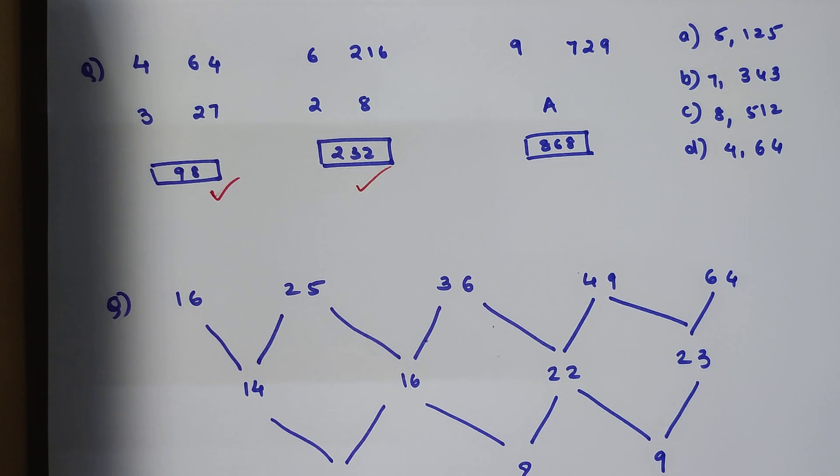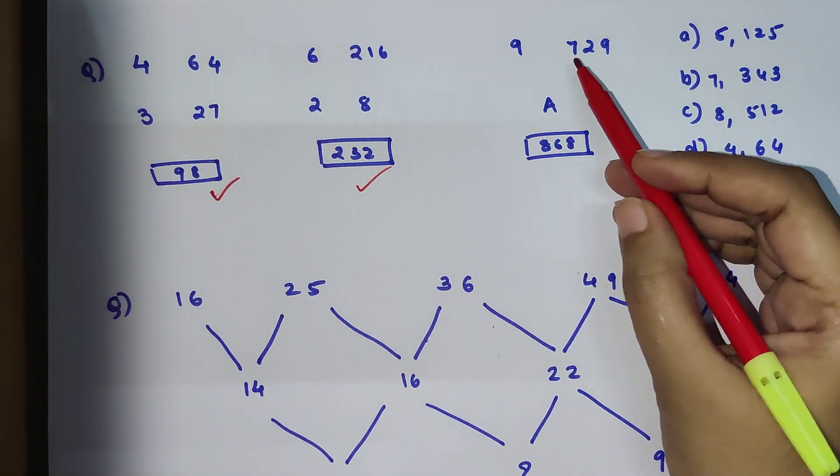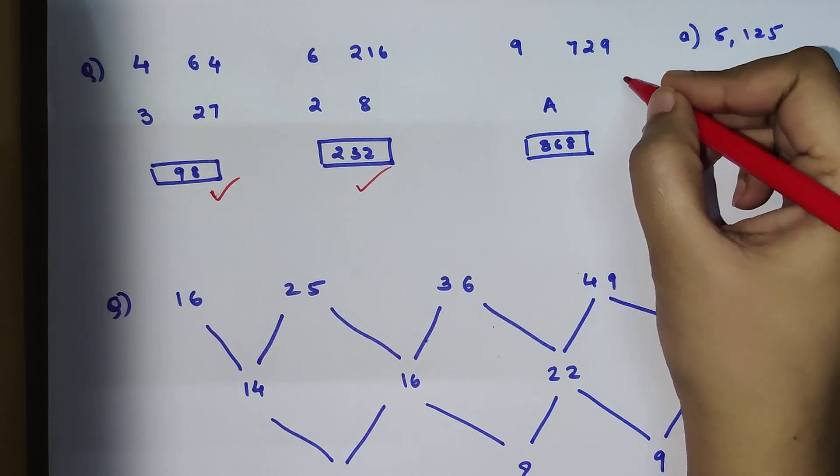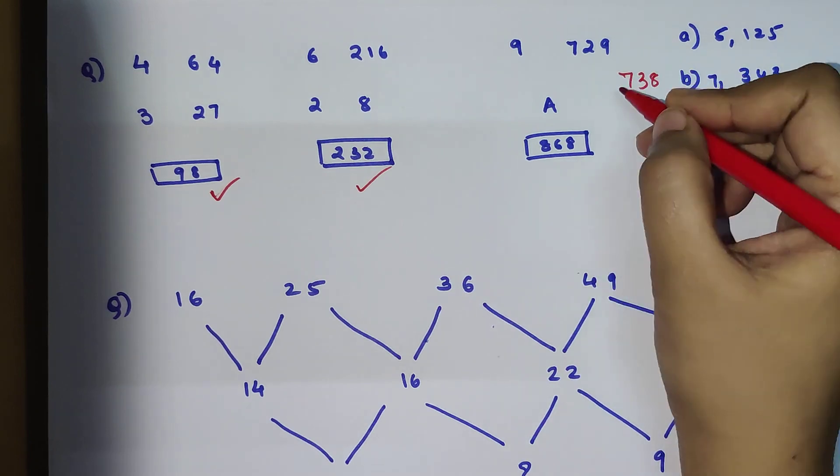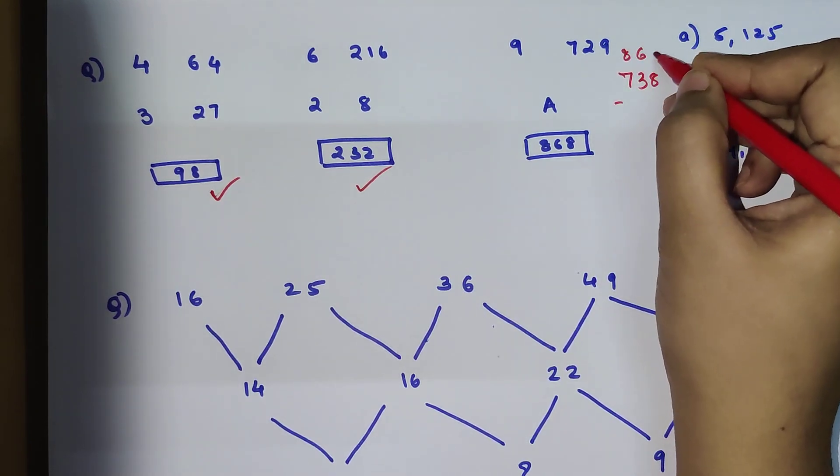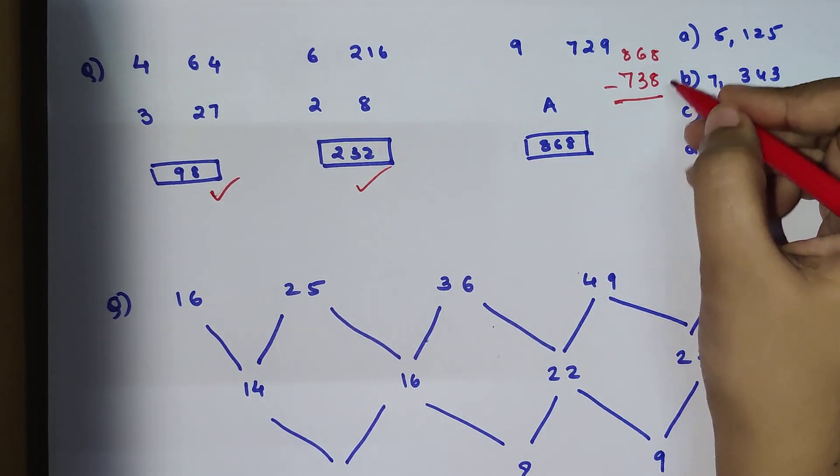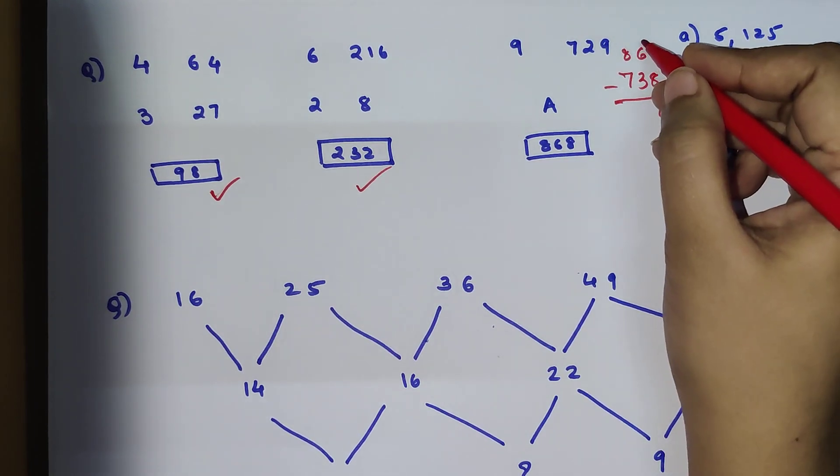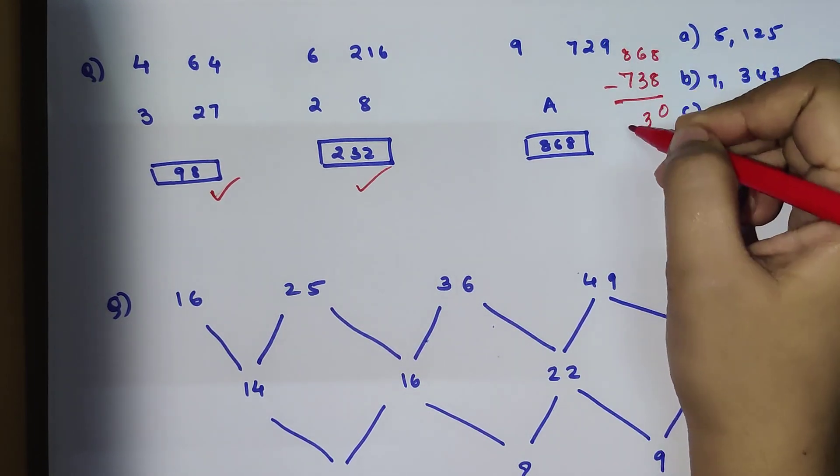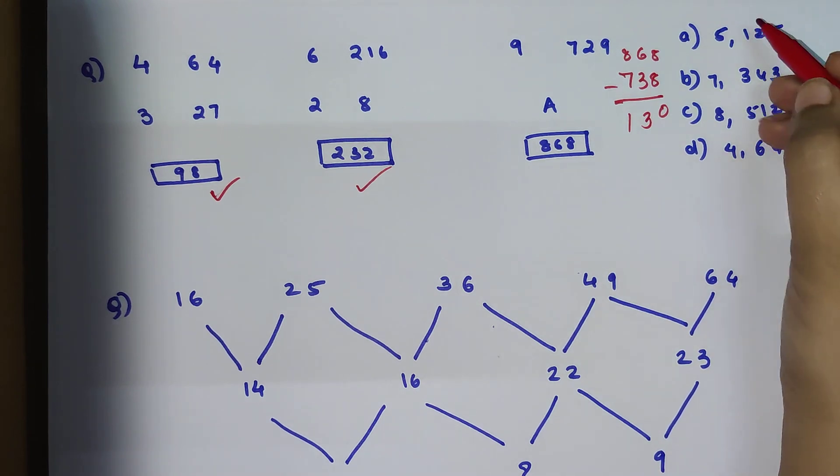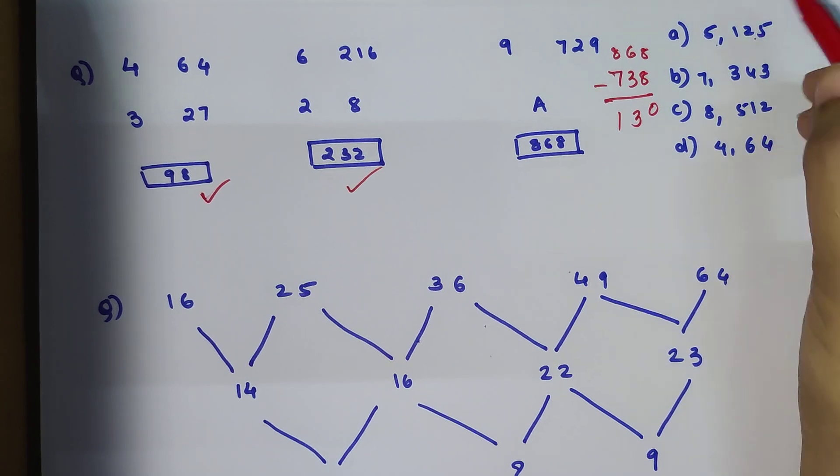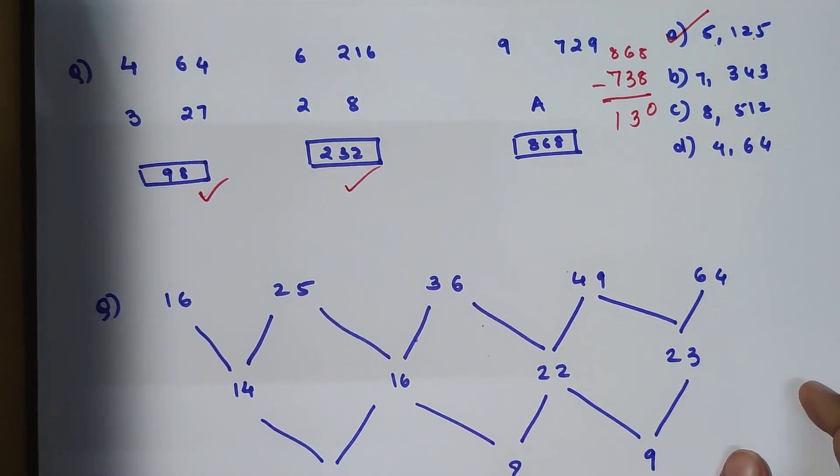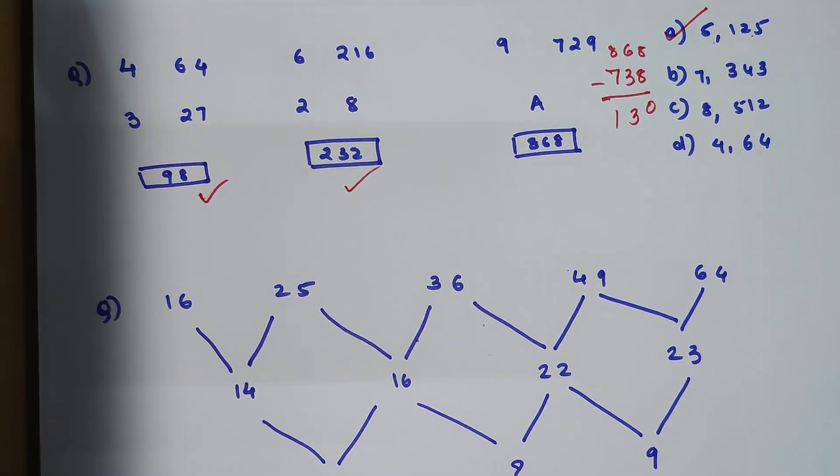Now the next one. We have 9 and 729, so that is coming out to be 738. Now what you need to add is, let's subtract 8, 68 from it. So your final answer will be 0, and this will be 3, and this is 130. Let's see which combination gets you 130. 5 plus 125 gets you 130, so option A is the correct option.